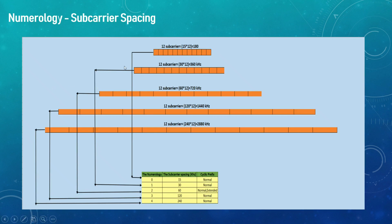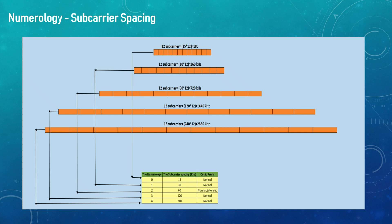We can see in this picture that the total subcarrier count per resource block will be 12. The only thing that changes is the subcarrier spacing. For numerology 0, it is 15 into 12, that is 180 kilohertz. For numerology 1, the subcarriers are still 12 but the spacing changes from 15 to 30, giving 360 kilohertz. For numerology 2, still 12 subcarriers but the spacing is 60 kilohertz.